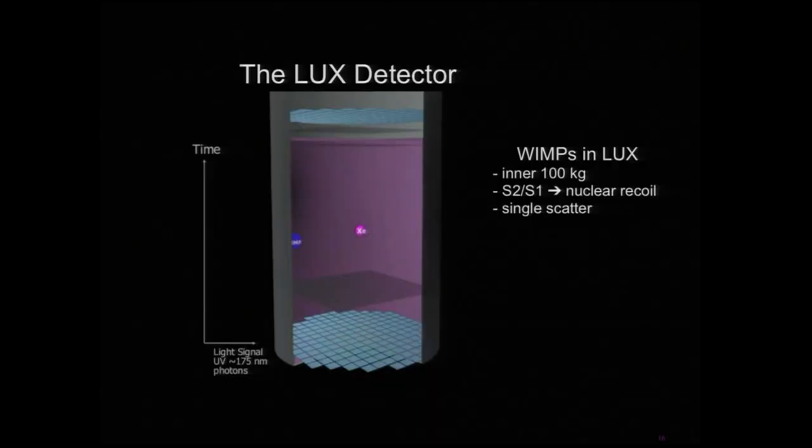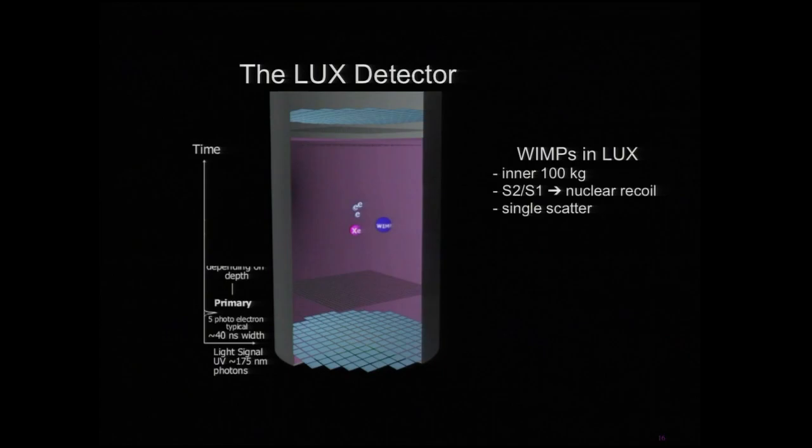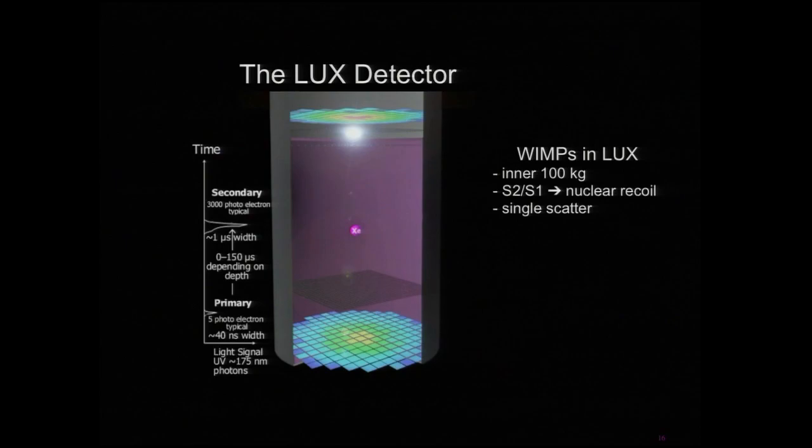Those of you who were here last week will recognize this cartoon — going through it quickly: a xenon atom gets struck by a WIMP, there's a flash of light, and some electrons are freed. The electrons travel up, and when they hit the gas they produce a second signal. And Tom's going to talk about how we combine these various signals to put together some knowledge about the underlying particles.